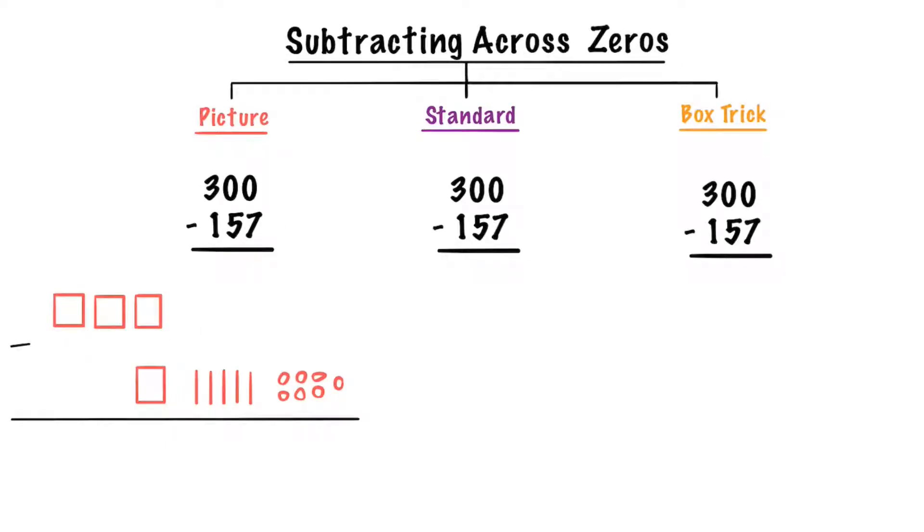Now we don't have any ones or tens on top so we have to go to the hundreds place. We're going to take one of those hundreds and break it into 10 tens. Now that we have 10 tens we're going to take one of those tens and break it into 10 ones.